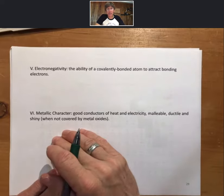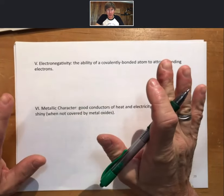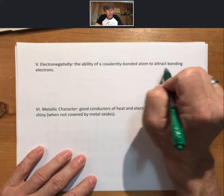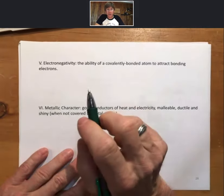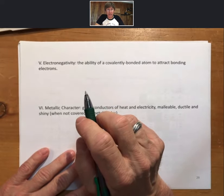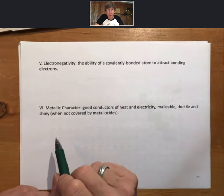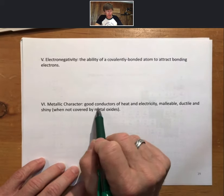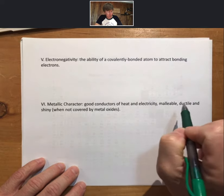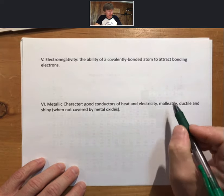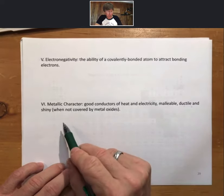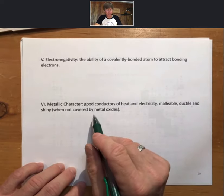Now, we're going to run through a couple more terms. We're almost done here. Hold on. Electronegativity, the ability of a covalent bonded atom to attract bonding electrons. You do have to know that definition, even though we haven't talked about bonds yet, because it will help you as we come to the next lecture outline. Metallic character, good conductors of heat and electricity, malleable, ductile, so malleable can be bent, ductile can be made into thin sheets and shiny when not covered in metal oxides. All right.